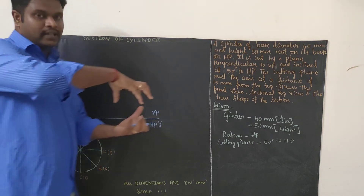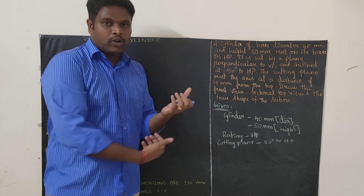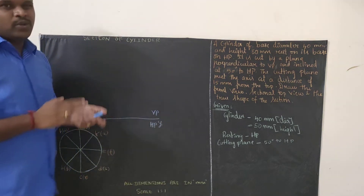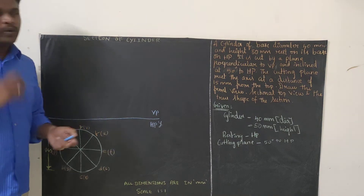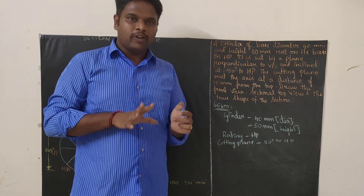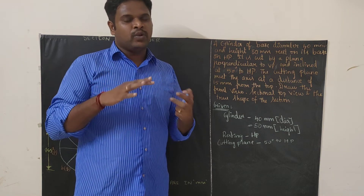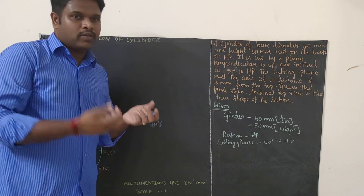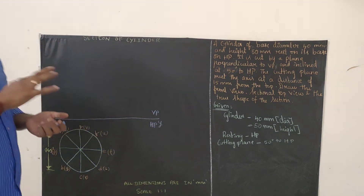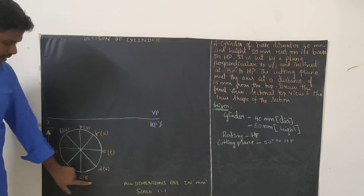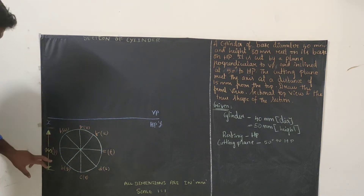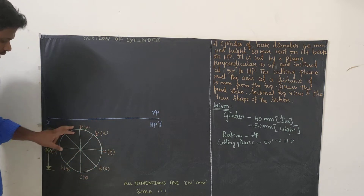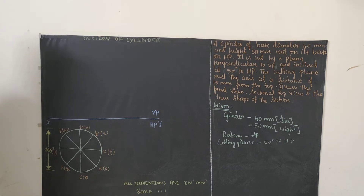The top surface points are named A, B, C, D, E, F, G, H and the bottom surface is P, Q, R, S, T, U, V, W. In section of solids, avoid using numerals for naming front view points because we use numbers for the cutting plane — this avoids confusion. Dimension the diameter of the circle as 40 mm.